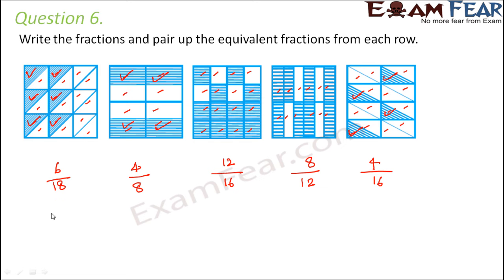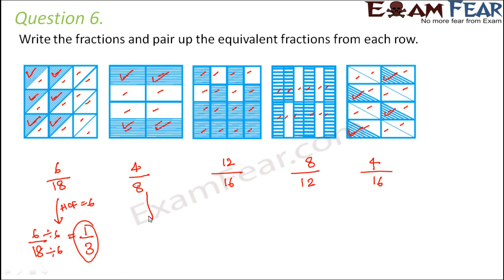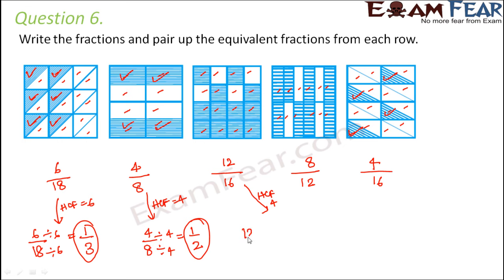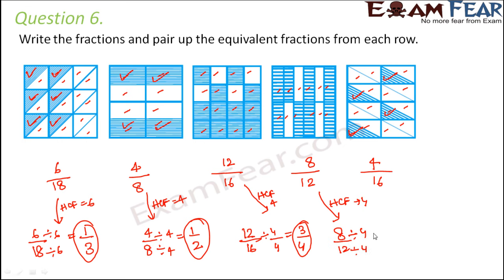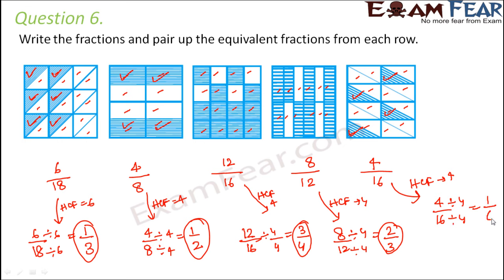So these are the fractions. Now let us convert each of them into simplest form. For 6 by 18, the HCF is 6, so dividing gives 1 by 3. For 4 by 8, the HCF is 4, so dividing gives 1 by 2. For 12 by 16, the HCF is 4, so dividing gives 3 by 4. For 8 by 12, the HCF is 4, so dividing gives 2 by 3. And for 4 by 16, the HCF is 4, so dividing gives 1 by 4.